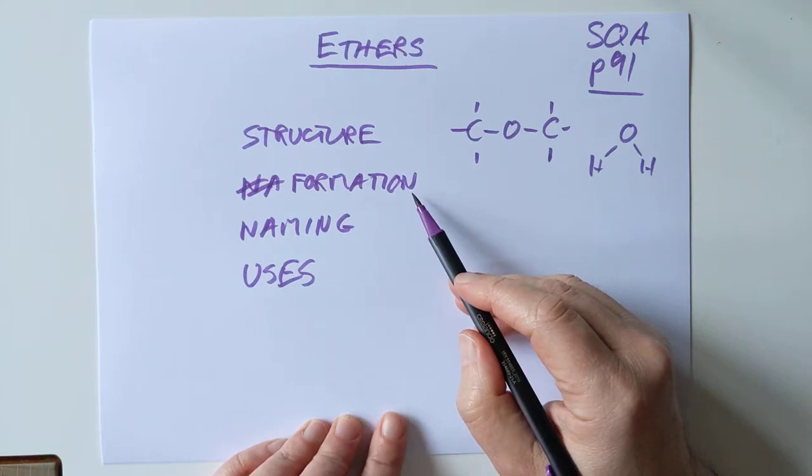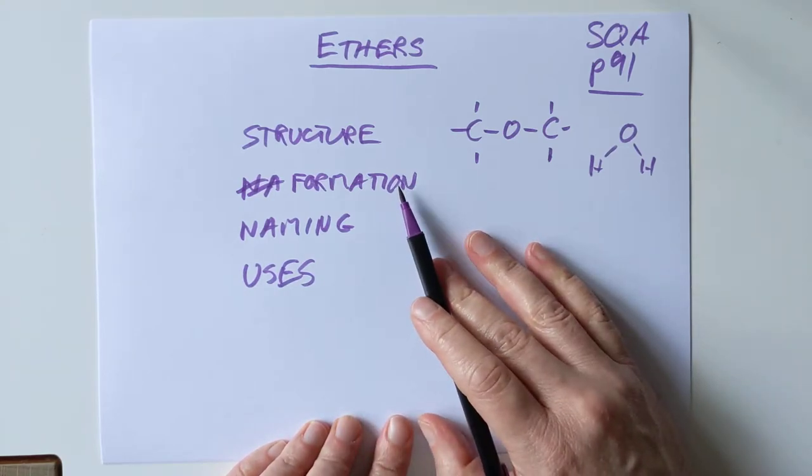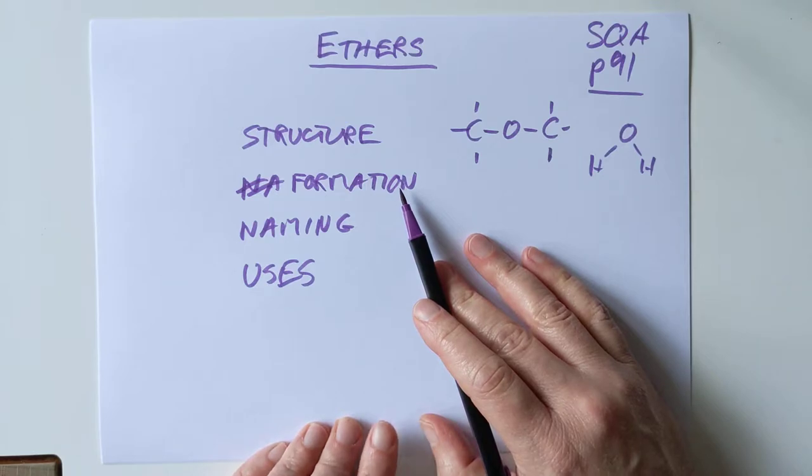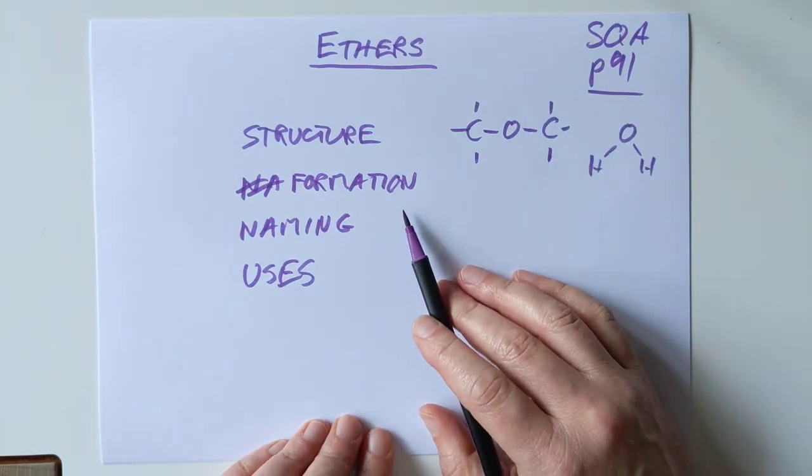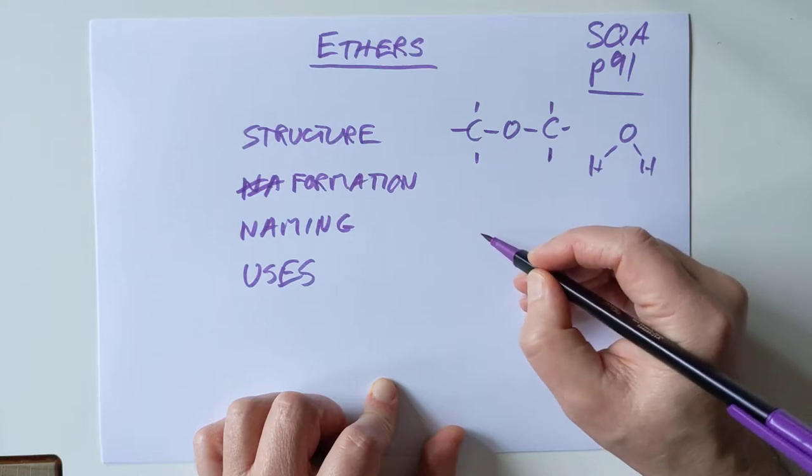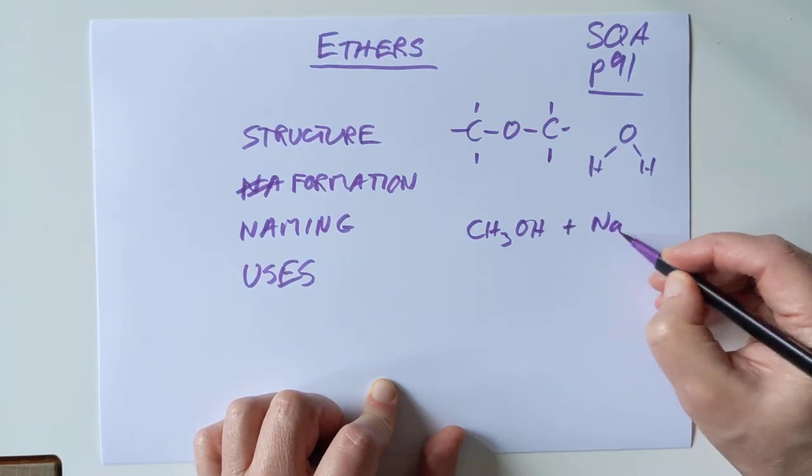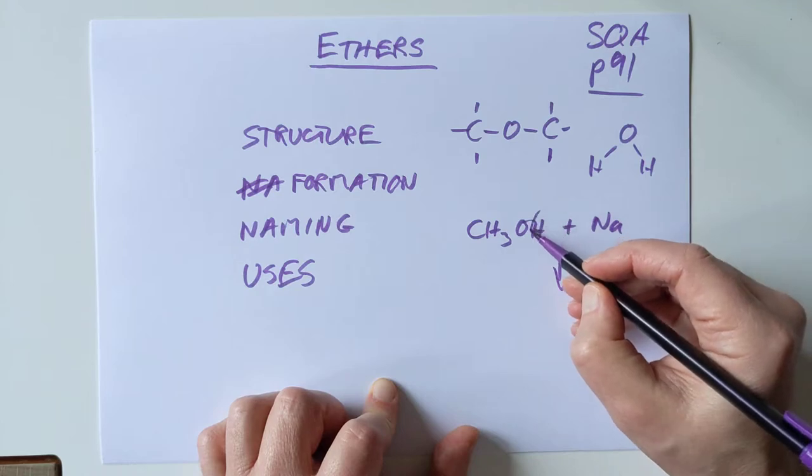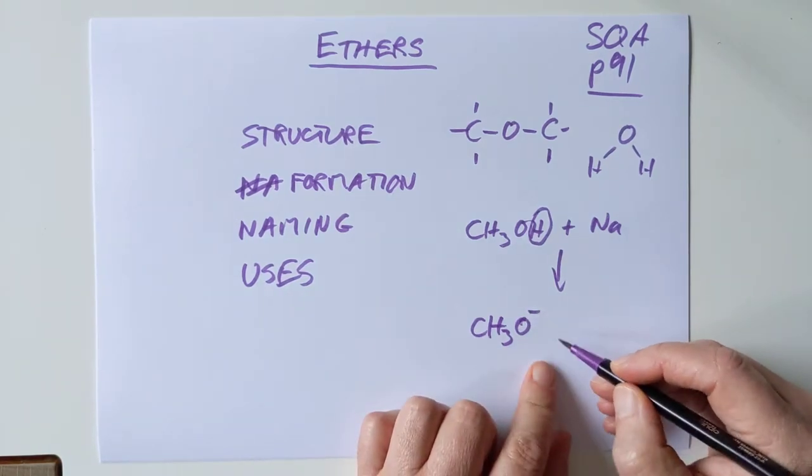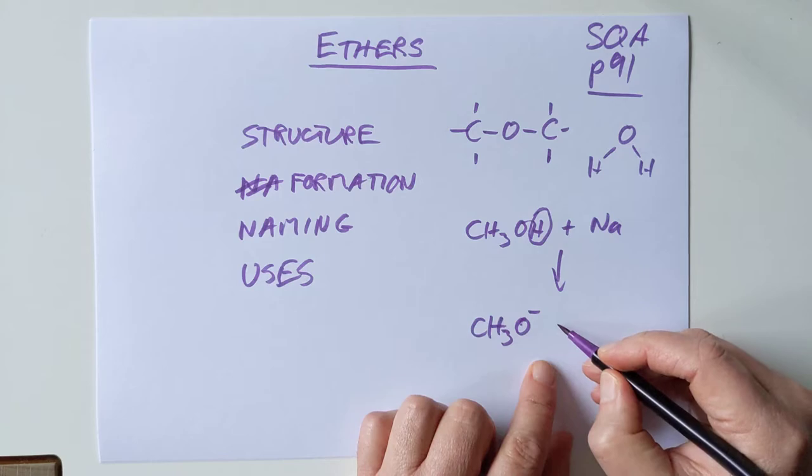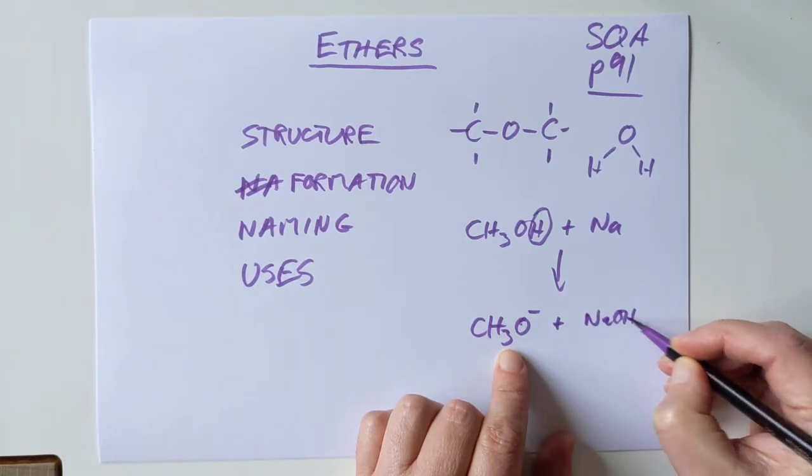Let's have a look at how you would actually make this. The quick version is you need to take an alcohol, for example methanol, cook it up with a group 1 metal, and what that does is strip the hydrogen off here, and you're left with what's called an alkoxide ion. So you'll form that, and you'll form sodium hydroxide, and you'll also form hydrogen gas.